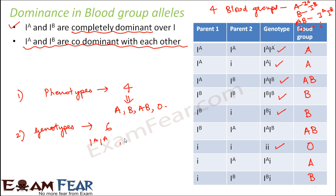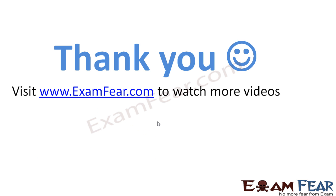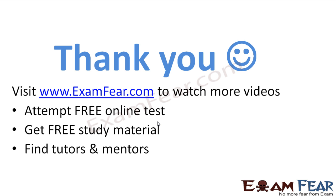So with the three alleles of the blood group gene — IA, IB, and I — you can have 4 unique phenotypes and 6 unique genotypes. These are the six unique genotypes. Thank you. Please visit examfear.com to watch more videos, attempt free online tests, get free study material, and find tutors and mentors.